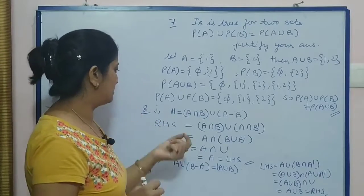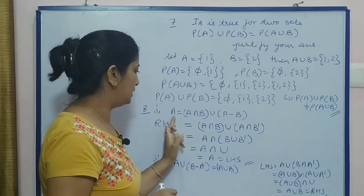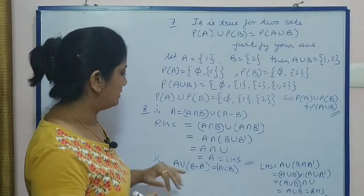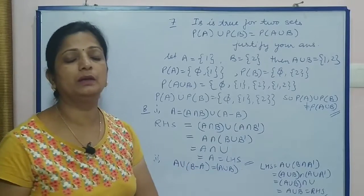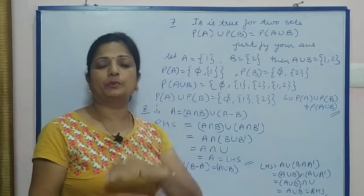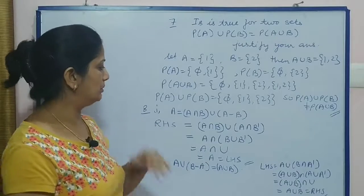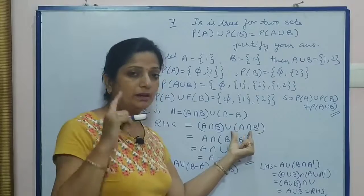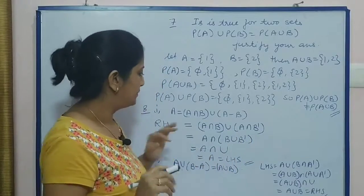Question number 8 has two parts. First part: prove that A equals (A intersection B) union (A minus B). Second part: (A union B) minus A equals A union B. We use the properties we discussed at the start. A minus B is replaced by A intersection B complement.